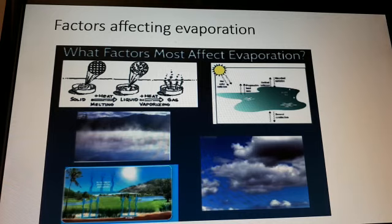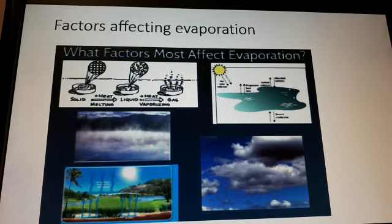The main factors affecting evaporation are: temperature, surface area, wind speed, humidity, and atmospheric pressure. When temperature increases, the rate of evaporation increases. When surface area increases, the rate of evaporation increases. When wind speed increases, the rate of evaporation increases. When humidity increases, the rate of evaporation decreases. When atmospheric pressure increases, the rate of evaporation decreases.